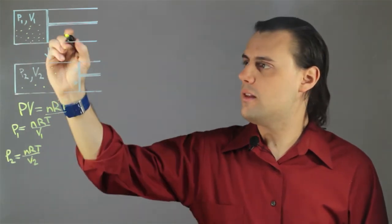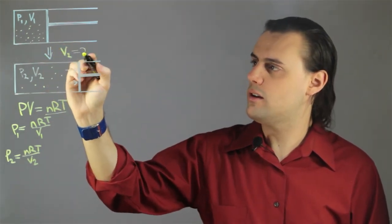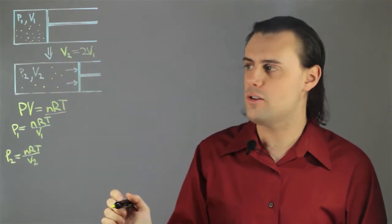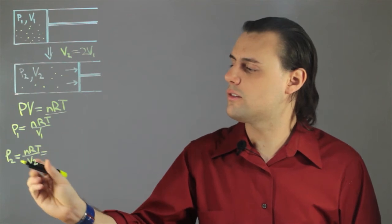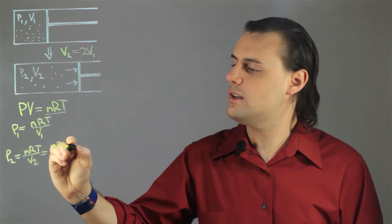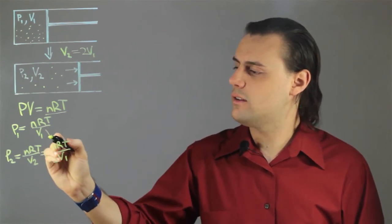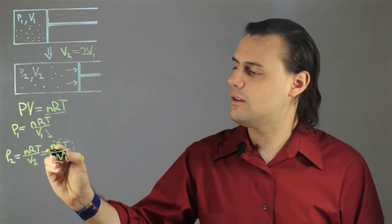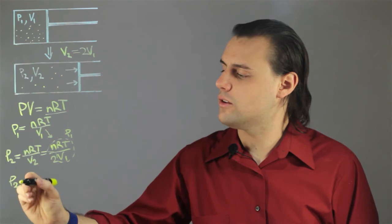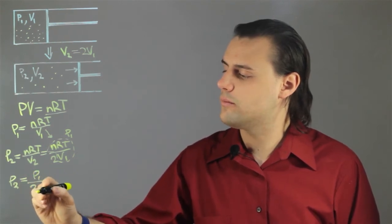Now if I assume that V2 is twice V1, in other words I've doubled the initial volume, then I can substitute that into the expression for P2, the new pressure. So I have nRT divided 2V1, and I recognize that this is just P1. So by doubling the volume I have cut the initial pressure in half.